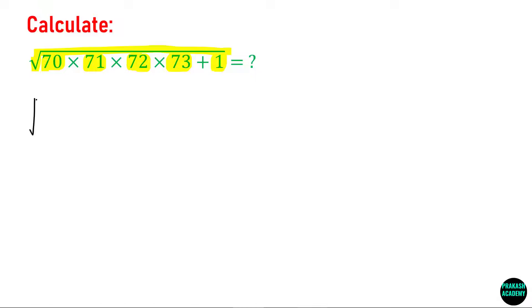You have 70, 71 can be written as 70 plus 1. Similarly 72 can be written as 70 plus 2. 73 can be written as 70 plus 3, and plus 1. You see every term has 70 in it. So let us make a substitution.